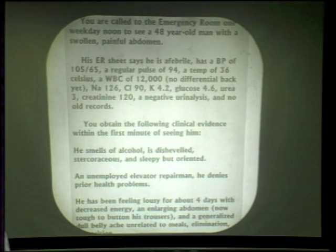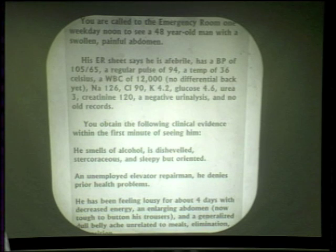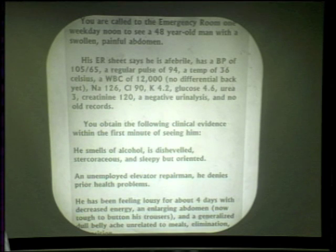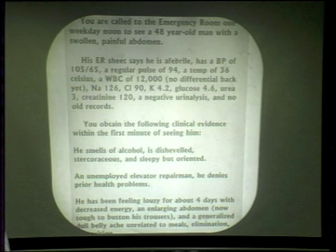Sodium of 126 — a bit low. Chlorides 90 — a bit low. Potassium 4.2, okay. Glucose 4.6, okay. Urea 3 — a bit low. Creatinine 120, okay. A negative urinalysis — no blood, pus, or protein in his urine — and no old records. Fairly common situation, so all we know is what we've got right here on the spot.